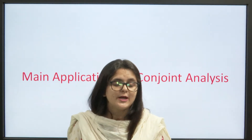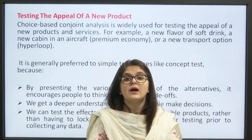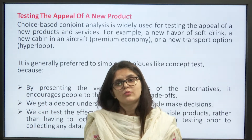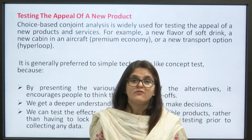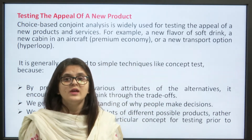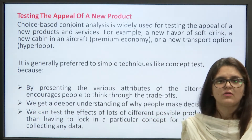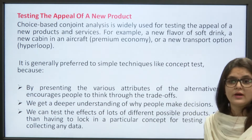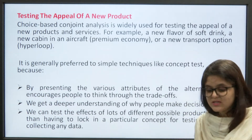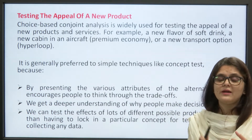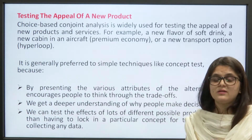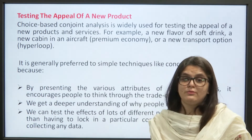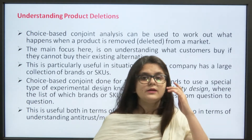The main applications of conjoint analysis include testing the appeal of a new product. Choice-based conjoint analysis can be used for testing the appeal of a new product — for example, a new flavor of soft drink, a new cabin in an aircraft, premium economy class, or new transport options like hyperloop. It is generally preferred over simpler techniques like concept testing. By presenting various attributes of alternatives, it encourages people to think through trade-offs and develops a deeper understanding of why people prefer and make decisions.